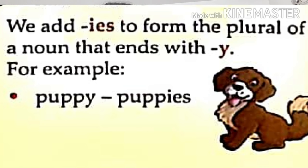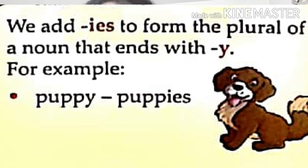Rule number three says: we add 'ies' to form the plural of a noun that ends with y. It means that singular nouns that end with y — to make them plural, we will remove y and put 'ies' at the end of those nouns. For example, puppy will become puppies because we will remove y and add 'ies'. Like that, the word donkey ends with y so we will remove y and add 'ies' so that it will become donkeys. Fly will become flies because it ends with y, so we remove y and add 'ies'.